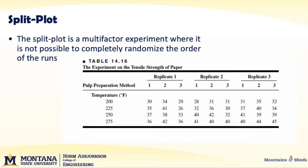We use split plot when we have multiple factors, often when we can't randomize the order of the run. Here is some example data from a situation where you have three different pulp prep methods. The pulp prep methods are pretty extensive — they're hard to do. You can't just prepare one in 30 seconds; it takes time. So the experimenters decided to try three different pulp prep methods.